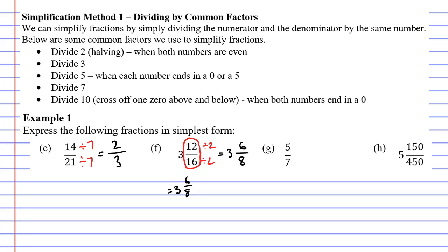If we take 3 and 6 eighths, what can we do with this fraction here? I reckon I could halve it again. Let's try that. Half of 6 is 3, and half of 8 is 4. Bringing our whole number over, we get 3 and 3 quarters. That is now in simplest form.